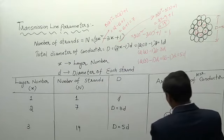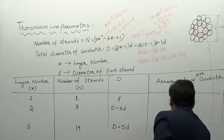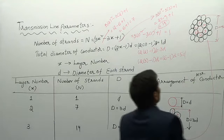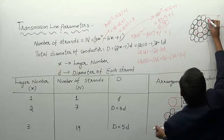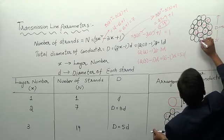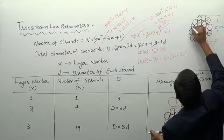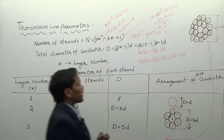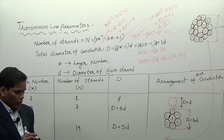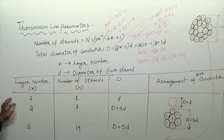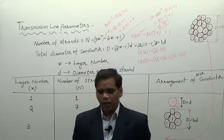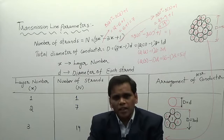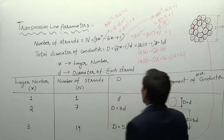This is the arrangement of the 3-layer ACSR conductor with total diameter 5d. Counting all conductors, we get 19 total. By increasing the number of layers, we increase the number of strands. In this way, different types of ACSR conductors are arranged. Apart from ACSR conductor, we also have expanded ACSR conductor, which we will discuss next.